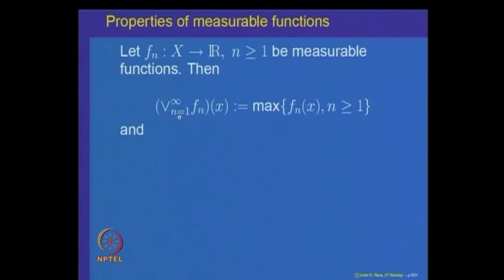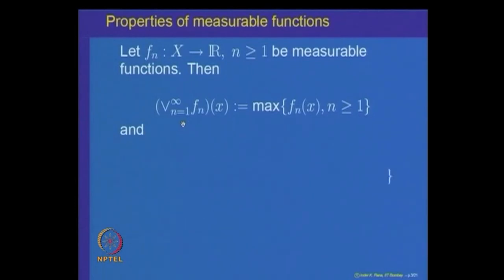We look at what is called the maximum of the f_n's. This is a function denoted by the join (V) from n=1 to infinity of f_n(x), defined as the maximum of f_n(x) for n ≥ 1. Similarly, we have the notion of minimum of f_n's, denoted by the wedge from n=1 to infinity, equal to the minimum. The claim is that if f_n is a sequence of measurable functions, then the maximum and the minimum are also measurable functions.